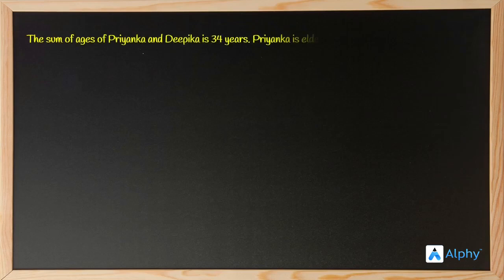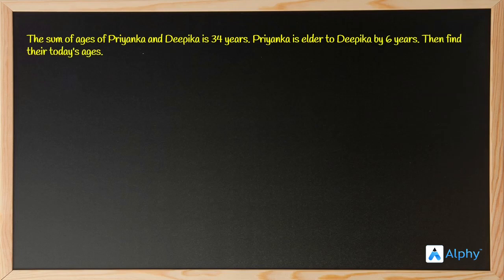Let's continue with word problems on linear equations in two variables. The sum of ages of Priyanka and Deepika is 34 years. Priyanka is elder to Deepika by 6 years. Find their ages. The two given conditions are: their sum of ages is 34, and Priyanka is elder to Deepika by 6 years.